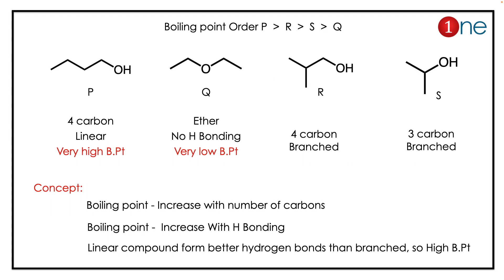You can find the carbons first. P and R have more carbons, but P is linear and R is branched, so P comes first, then R. Then the competition is between Q and S. There is no hydrogen bonding in ether compared to alcohol, so S comes before Q. The least will be Q. So the order is P, R, S, Q.